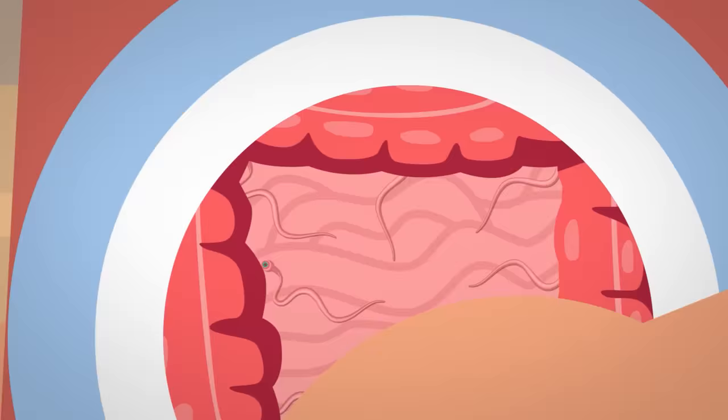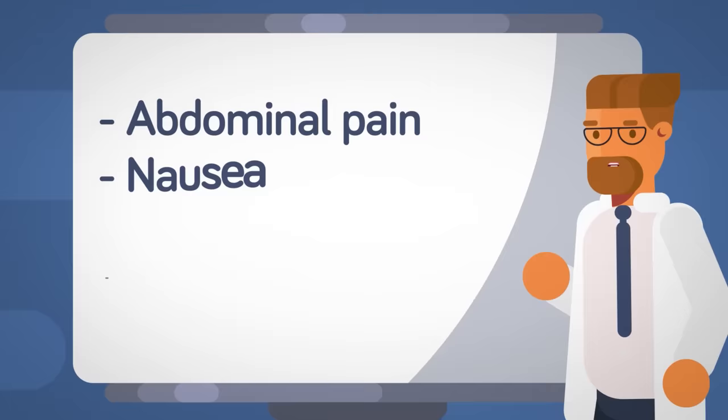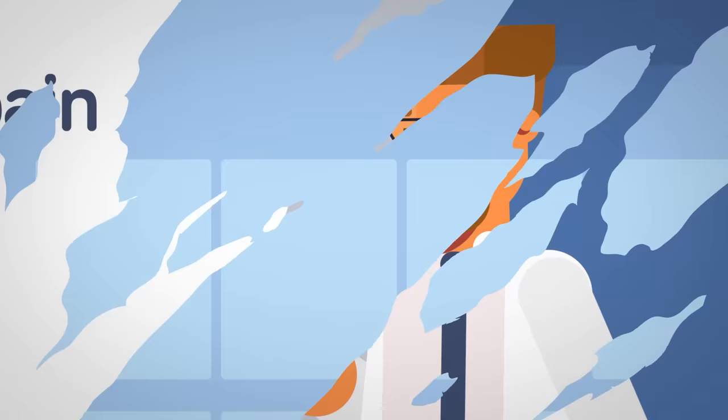If left untreated, it can cause abdominal pain, nausea, diarrhea, and most seriously, anemia that can result in weakness and other serious health conditions. This worm kills up to 60,000 people a year, and the good news is it's vulnerable to many anti-parasitic medications, but it's hard to detect before it reaches maturity. But it's not the most deadly parasitic worm.